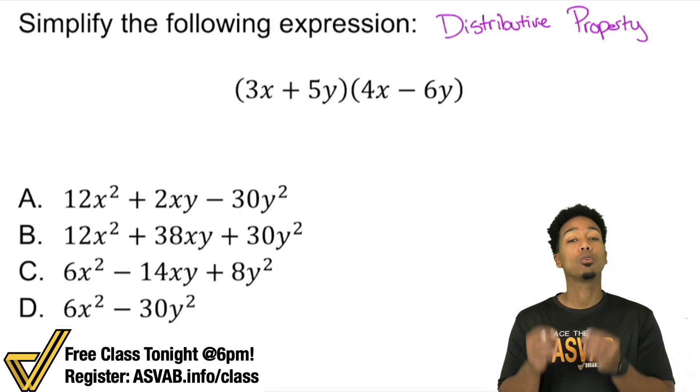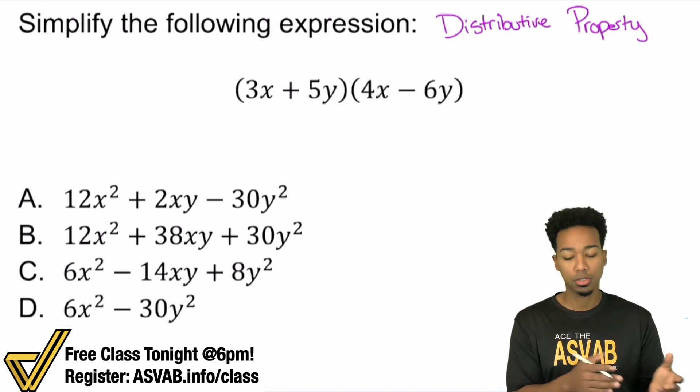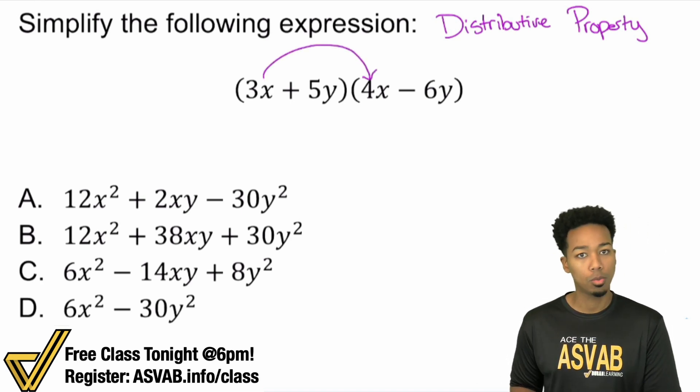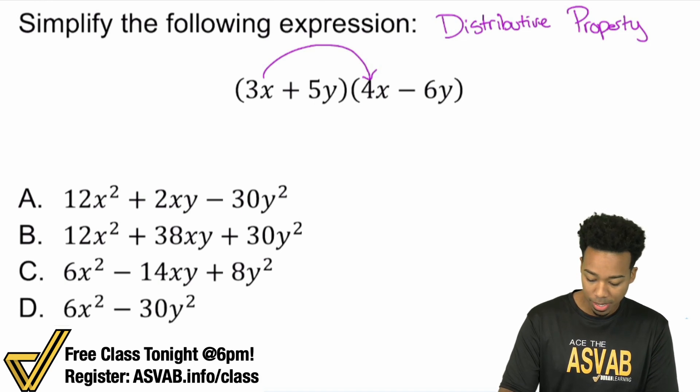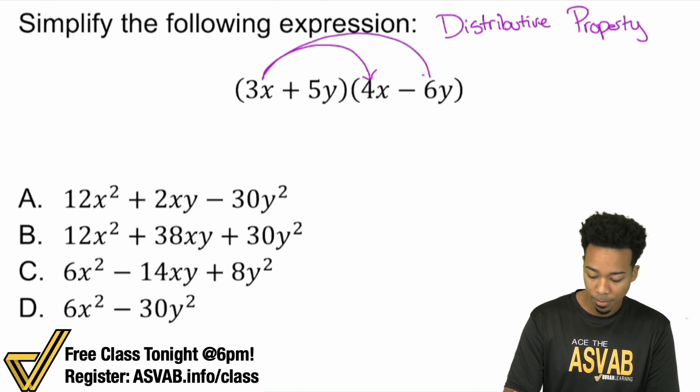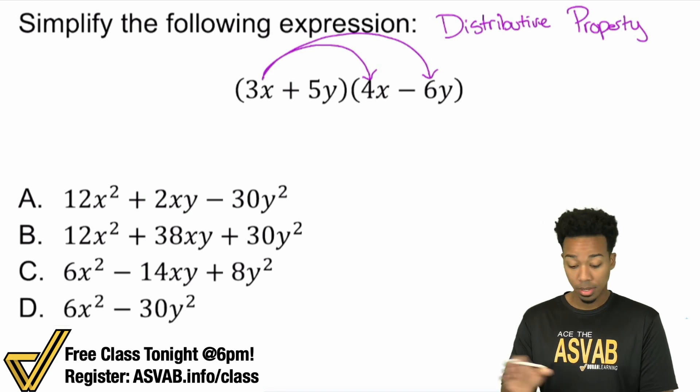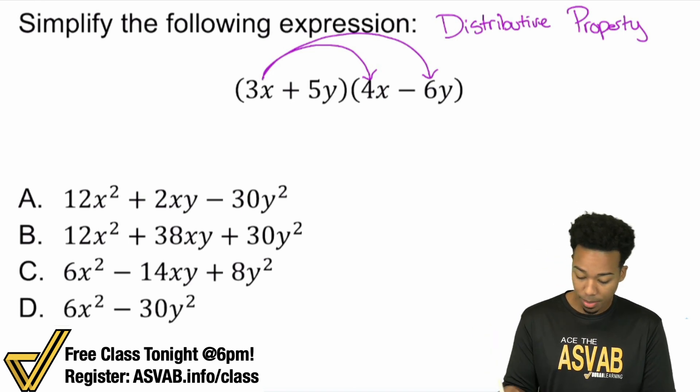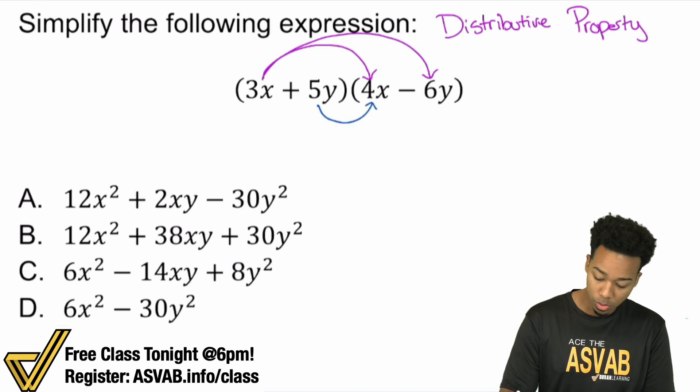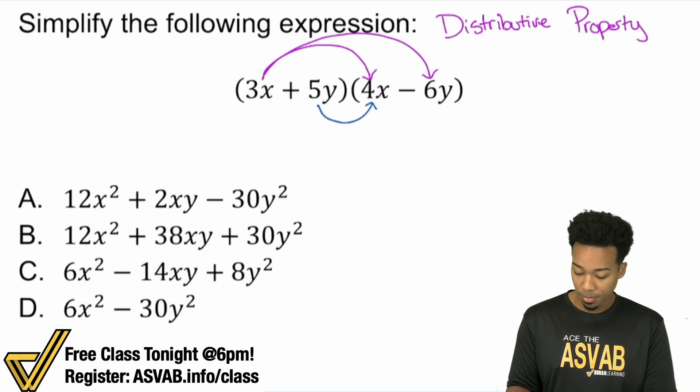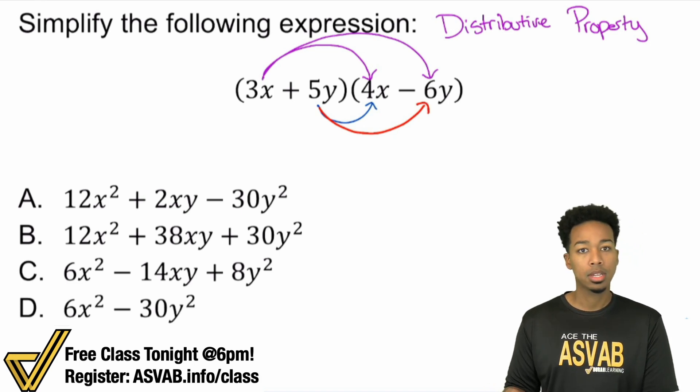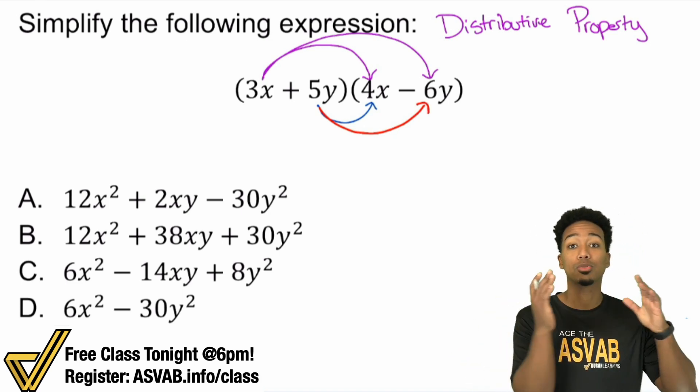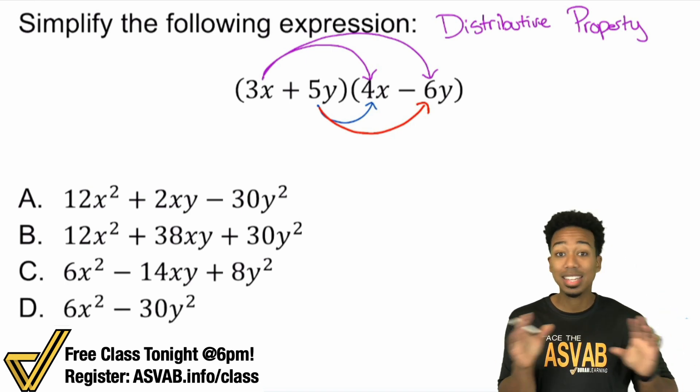Now what does that mean? All that means is the distributive property just means multiply everything from one side of the parentheses to the other side of the parentheses. That's it. Just multiply every term with the other term on the other side. So what that means is the 3x and the 4x those will multiply, and I'm not done yet because the 3x still needs to multiply with that minus 6y. The 3x multiplies with everything on the other side. Then the 5y multiplies with the 4x and then the 5y multiplies with the negative 6y. So again, everything from one side of the parentheses multiplies with everything from the other. That's the main idea.